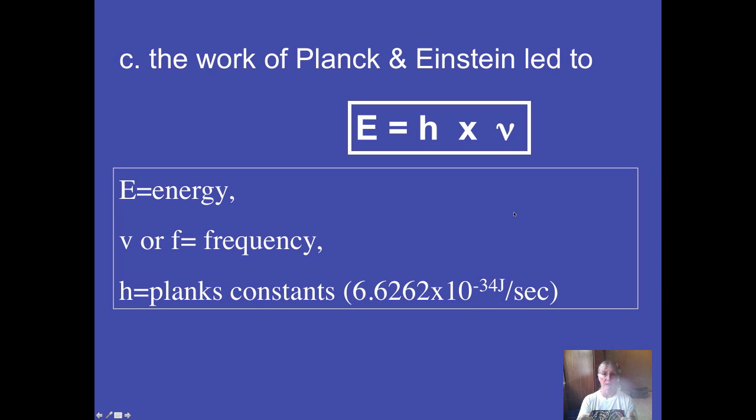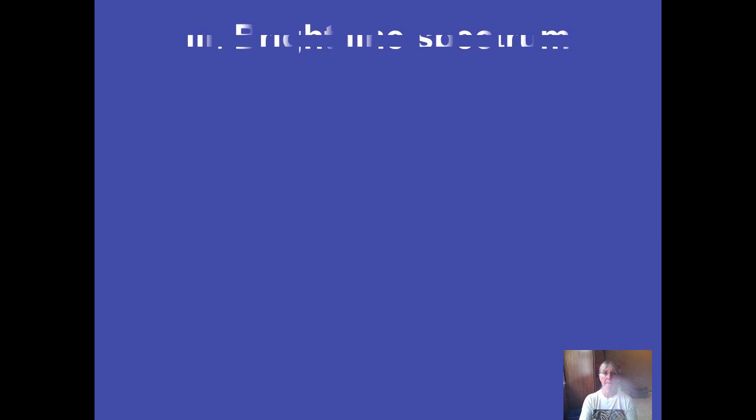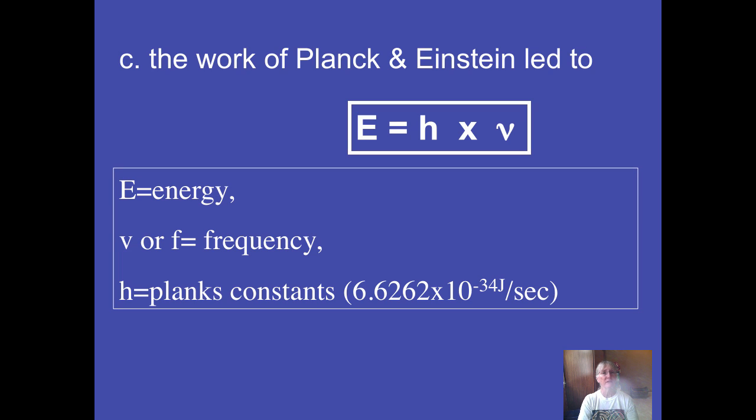That's just the opposite of the inverse relationship between wavelength and frequency. Let's follow that thought through. If wavelength is really small, frequency is really big. And if frequency is really big, then so is the energy. So very tiny wavelengths like gamma rays have very high energy because their wavelength is so small and their frequency is so large.